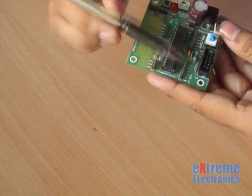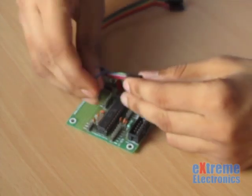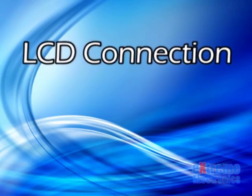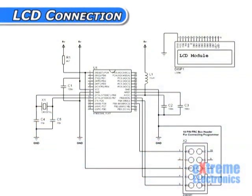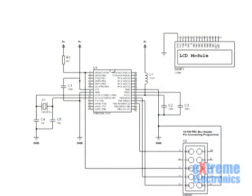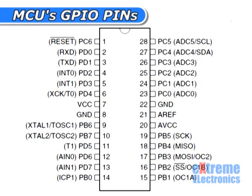Now let's connect an LCD module with our microcontroller. The development board has female-to-female wires for interconnections. Pin 1 of the LCD connects to ground, pin 2 to 5V, and pin 3 to the middle pin of a 10K preset with one end at 5V and the other at ground. The next seven pins used for data transfer are connected to the microcontroller's general purpose input-output pins, or GPIOs.